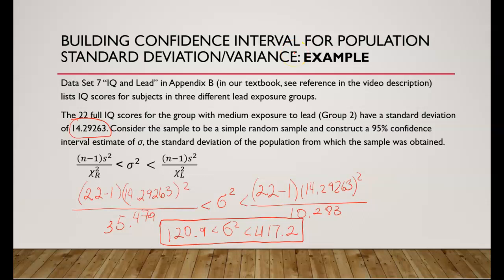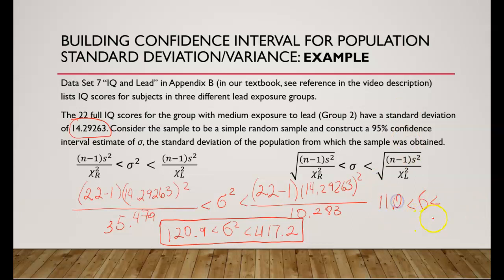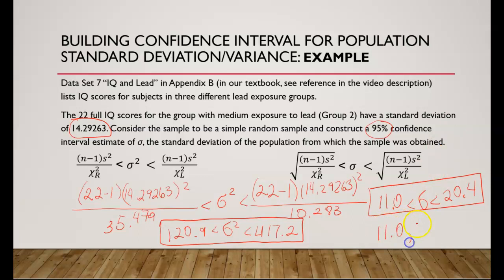To find the confidence interval for population standard deviation, we take the square root of both limits. The confidence interval limits for population standard deviation are 11.0 and 20.4. We round to one more decimal because we used the original data, which was rounded to no decimals. We are 95% confident that the limits of 11.0 to 20.4 contain the true value of the population standard deviation. We express the interval as 11.0 to 20.4 in interval notation, but cannot express it as standard deviation plus or minus error because the chi-square distribution is not symmetric.